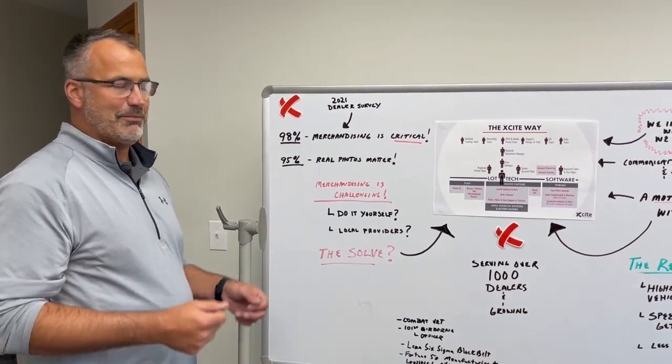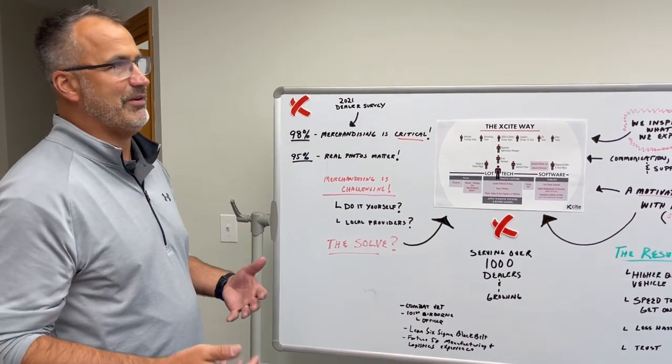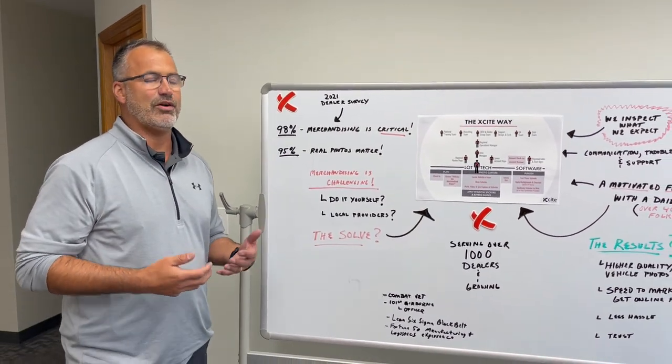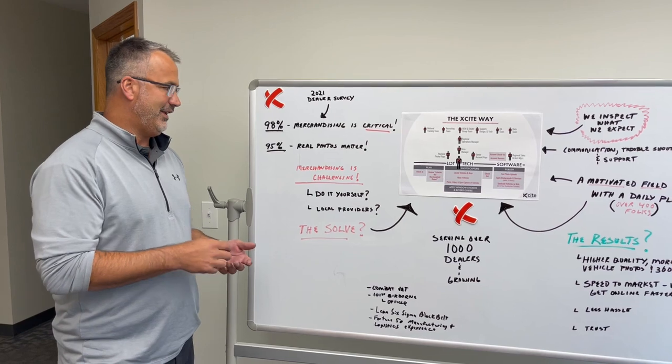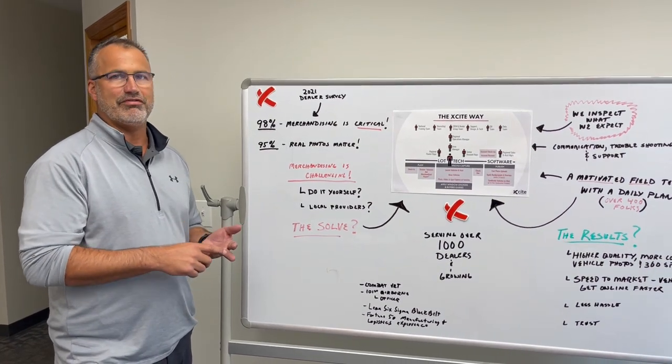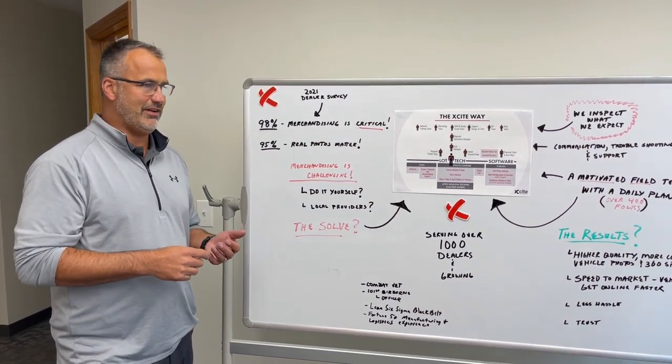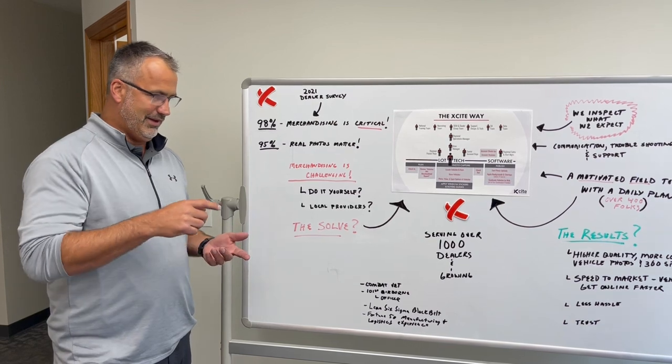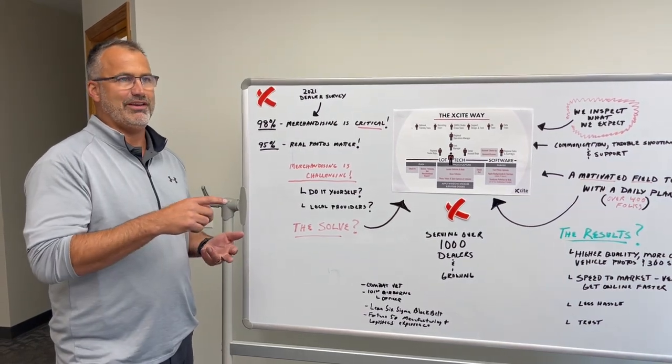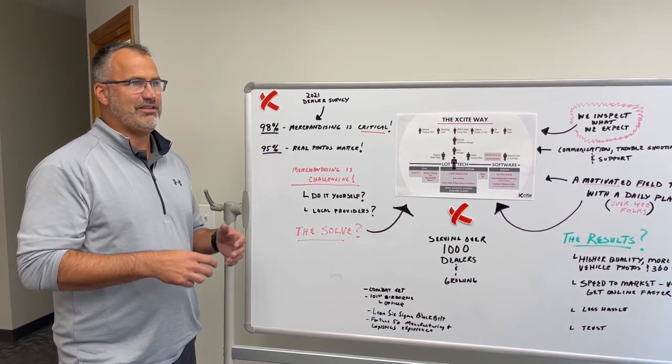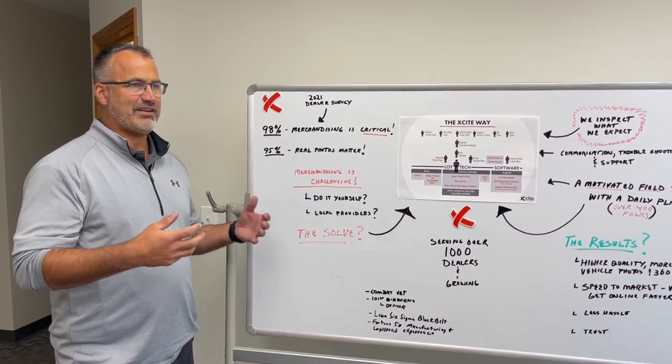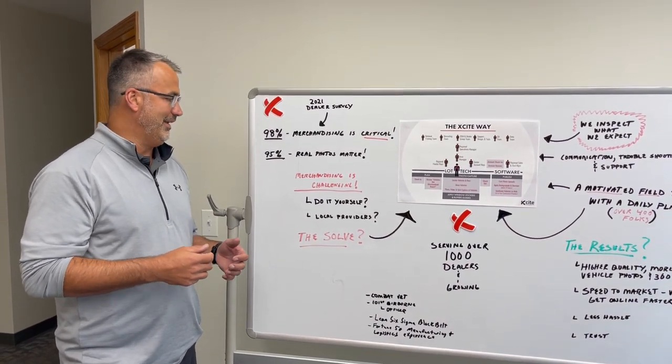So we know it's critical, right? But how do we get it done? From the dealer's perspective, this is challenging and it's only getting harder. To get good merchandising - high quality, fast, consistent merchandising done - you need the right people. You need the right software, the right software integrations, the troubleshooting, and this constantly ever-changing environment. And it can be tough.